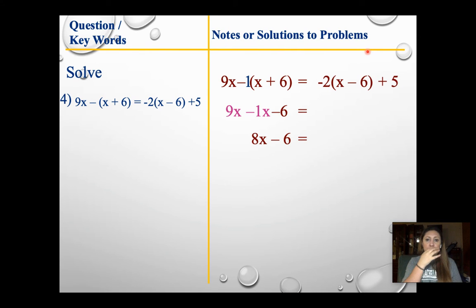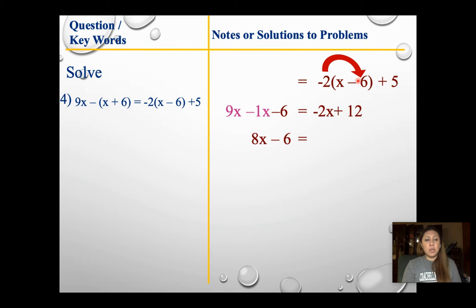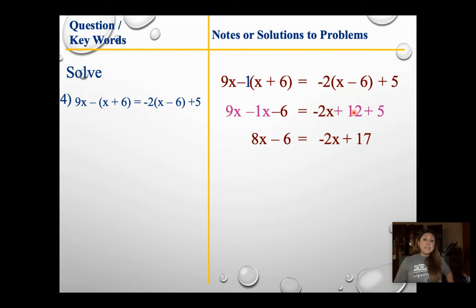Bring back the right side. I make the left side go away and focus just on the right. Negative 2 times x gives me negative 2x. Negative 2 times negative 6 gives me positive 12 — negative times negative gives me positive. Nothing happened to that 5, so I bring it down. What are my like terms? I don't have two x's this time — I have two constants. So I bring down negative 2x, and 12 plus 5 is 17.